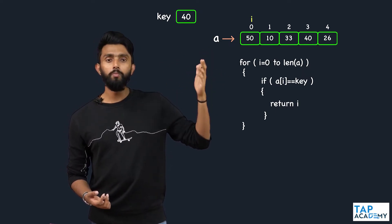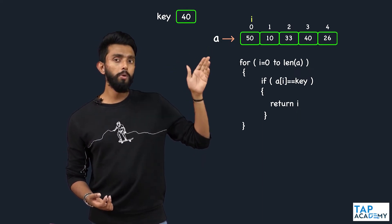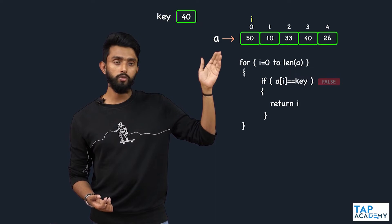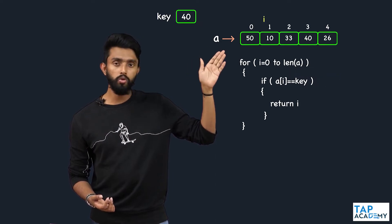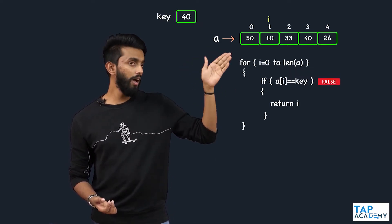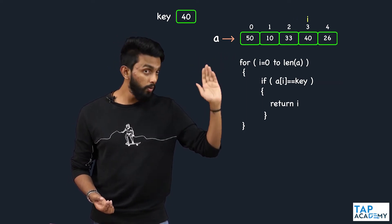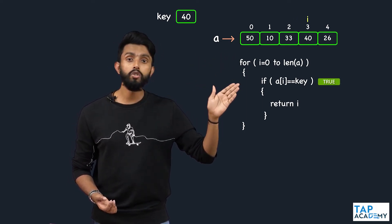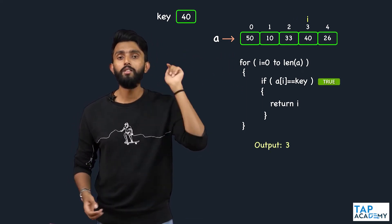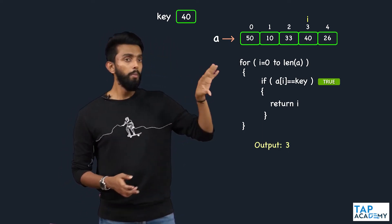Let us assume I run the loop. i starts from zero. If A of i is equal to key — no, condition is false. i moves forward. Condition is false. i moves forward. Condition is false. i moves forward. Condition is true. So I will return 3. It is at the third index.